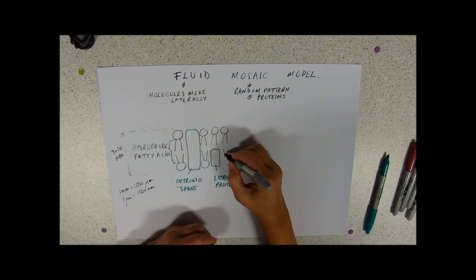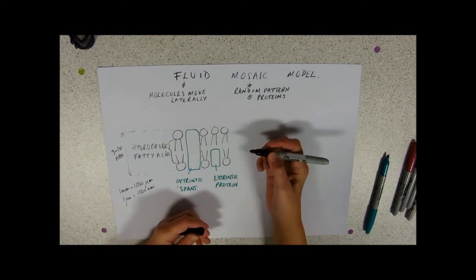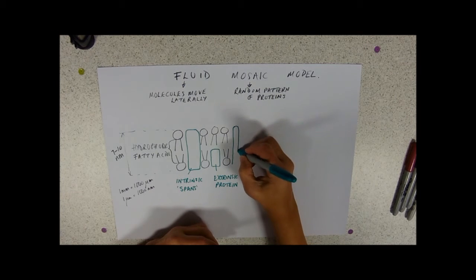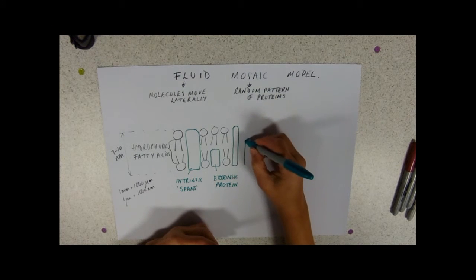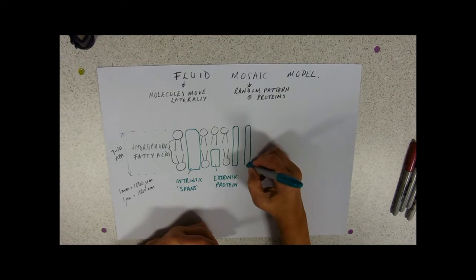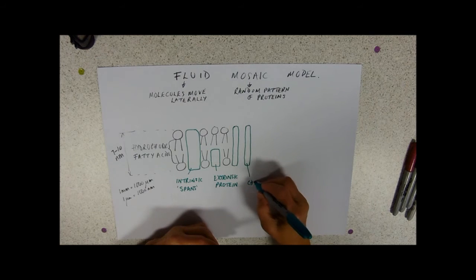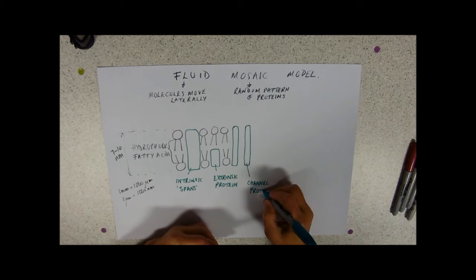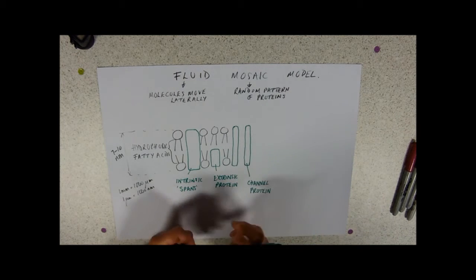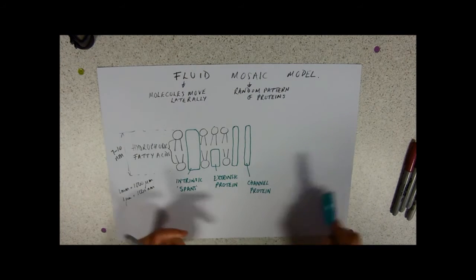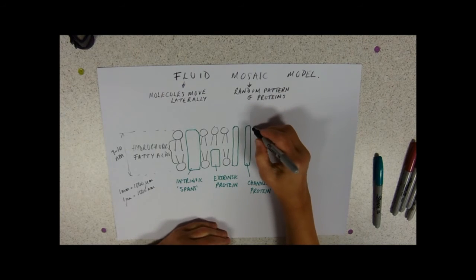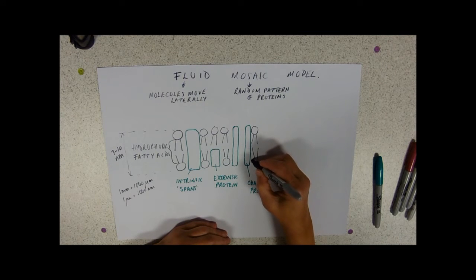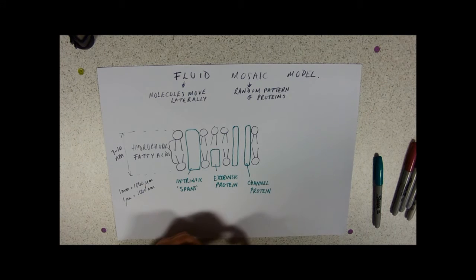I'm just going to draw a little bit more membrane. And I'm going to put in a channel protein. Now, a channel protein is a protein that has a hydrophilic hole down the middle. And they are specific to particular molecules. So, when we do membrane transport, we'll be talking about channel proteins being involved in facilitated diffusion, helping these polar molecules across. Each one's specific to the molecule that it's carrying.